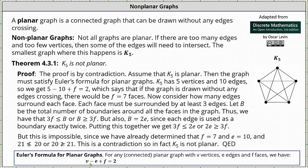From here using Euler's formula v minus e plus f equals 2, we get 5 minus 10 plus f equals 2. Solving for f, we get f equals 7, which says if the graph is drawn without any edges crossing, there would be f equals 7 faces.